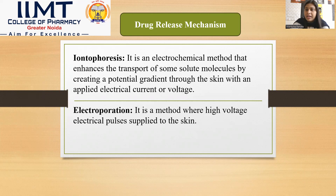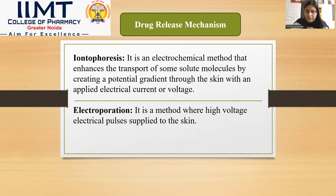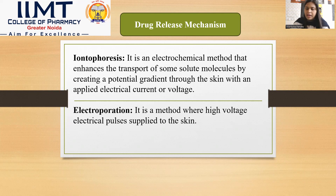What are the real drug release mechanisms? Basically, iontophoresis and electrophoresis. Iontophoresis is an electrochemical method that enhances the transportation of solute molecules by creating a potential gradient through the skin with an applied electric voltage. In the case of electrophoresis, it is a method where a high voltage electric pulse is applied to the skin — an electrochemical method where skin permeation works through iontophoresis and electrophoresis.